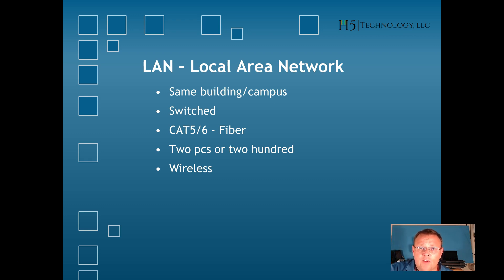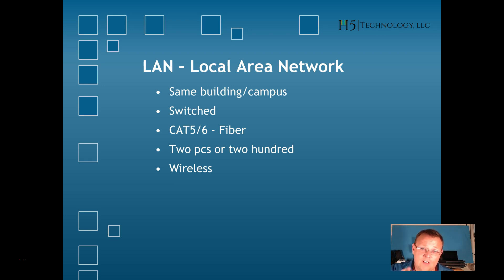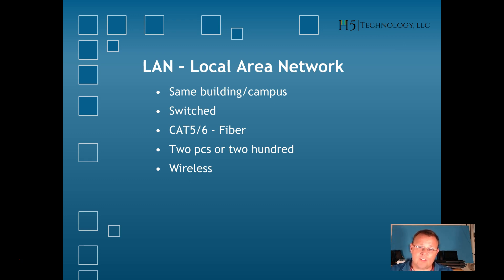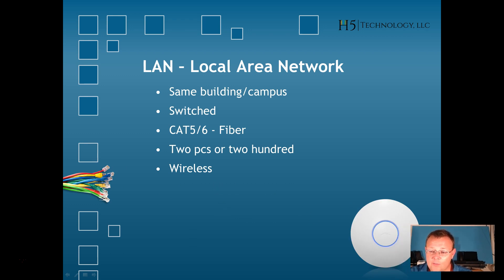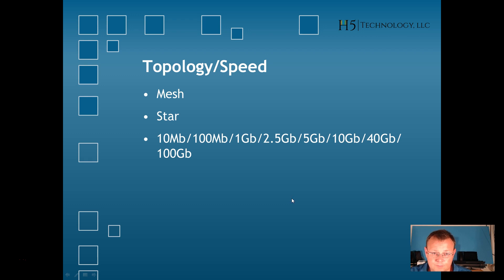Your local area network is probably going to have switches — if it's using hubs, call me and we'll take care of that. You're probably going to be connected to a switch. Fiber is becoming more and more popular even in the local area network, more so in the data center, but I've heard people running it to their desktops as of late. You can see what Cat5 and Cat6 Ethernet cables look like, and there's also a familiar sight — that is a Ubiquiti Networks UAP-AC Pro.